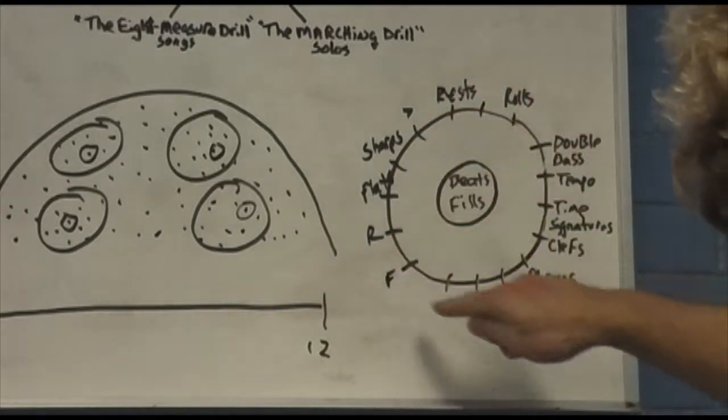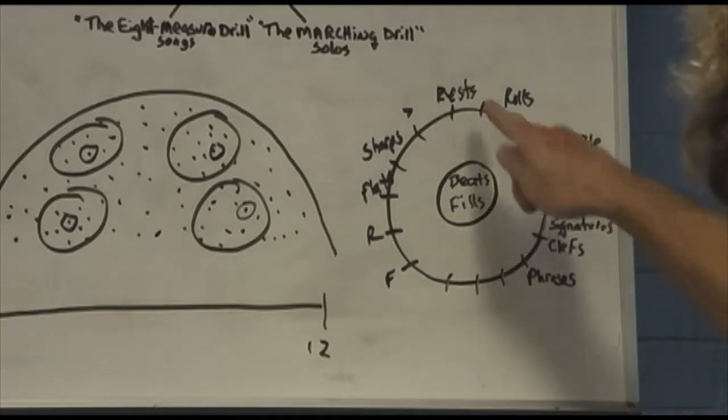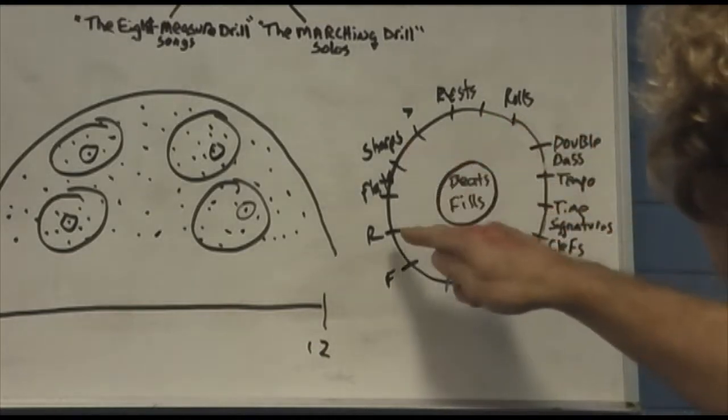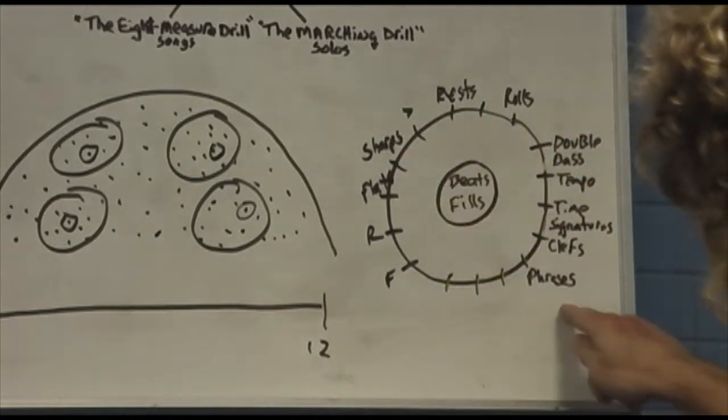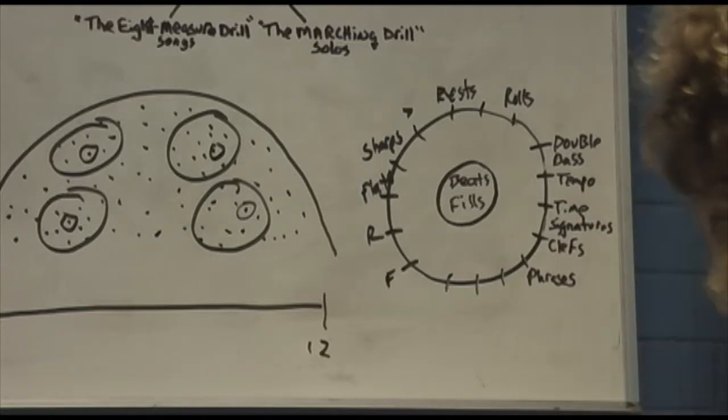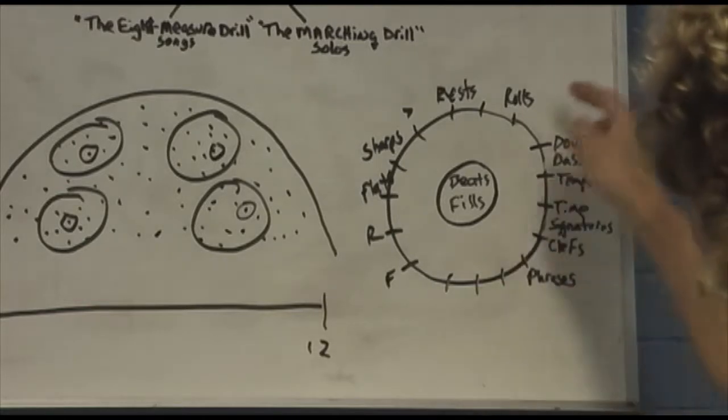So what I did was I put all the facets and disciplines of drums on the outer circle. Like rests, rolls, sharps, flats, ruffs, flams, phrases, clefs, time signatures, tempo, double bass, you name it. And beats and fills were out here.